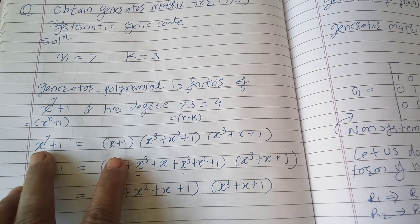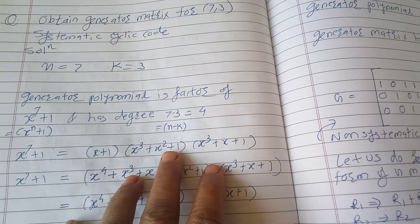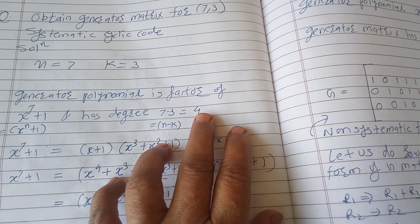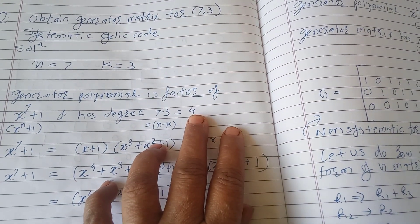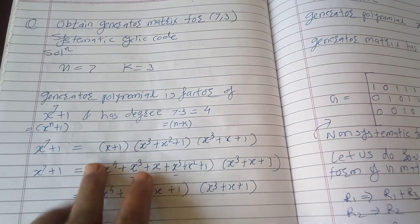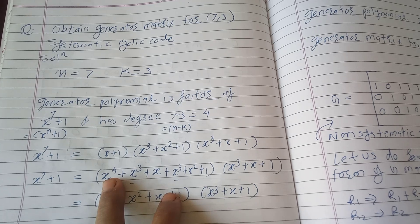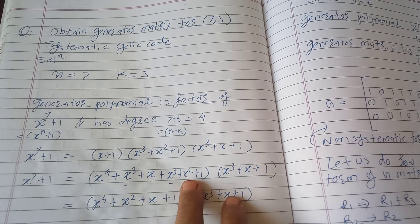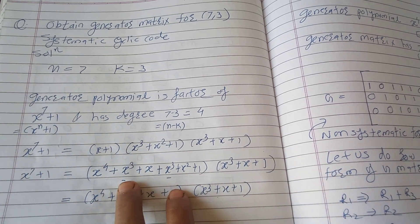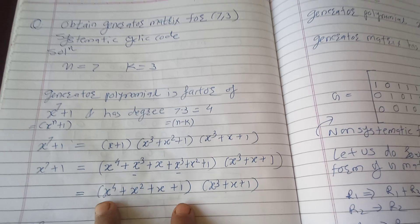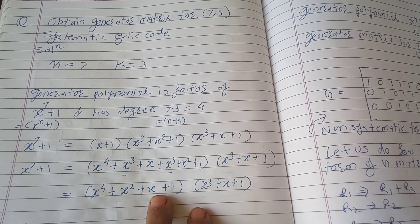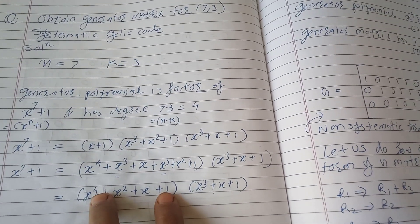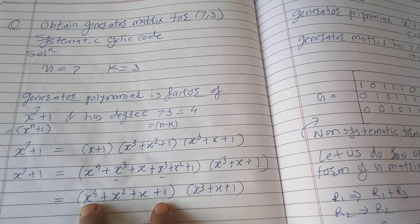We know the factorization of x^7 + 1 is (x+1)(x^3 + x^2 + 1)(x^3 + x + 1), but we want the degree to be 4. The degree is the highest power of the polynomial. If you multiply (x+1) and (x^3 + x^2 + 1), you get x^4 + x^3 + x + x^3 + x^2 + 1. This is a mod 2 operation, so the x^3 terms cancel out, giving x^4 + x^2 + x + 1.